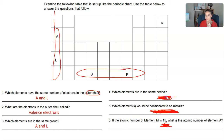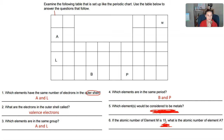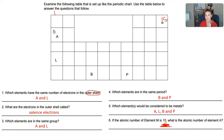Which elements would be considered metals? A, L, B, and P are all on the left-hand side of the zigzag line on the periodic table, so they are considered metals. If the atomic number of M is 15, what would be the atomic number of A? Remember we count just like we read — across and then down — so the answer would be 16.